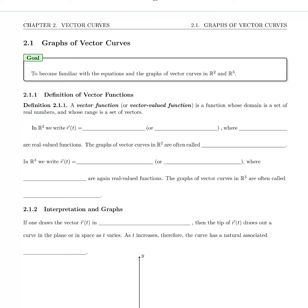In R² we would write vector r(t) as a vector with components f₁(t) and f₂(t), or if we used the ij notation we would write f₁(t) times i hat plus f₂(t) times j hat.